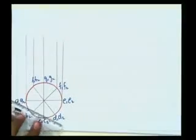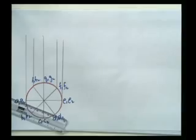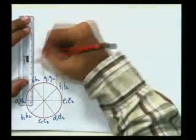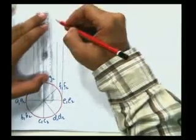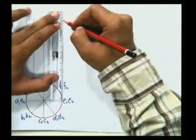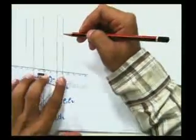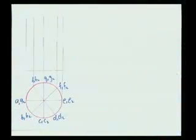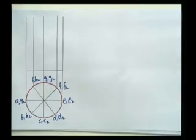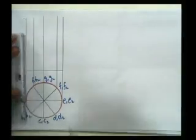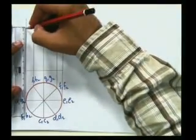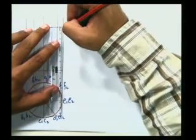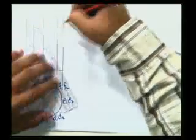Using my pencil I'll draw the front view of this cylinder. I've taken this as my base. From the base, the height given is 75mm, so I will take 75mm and cut it here and 75mm cut here.